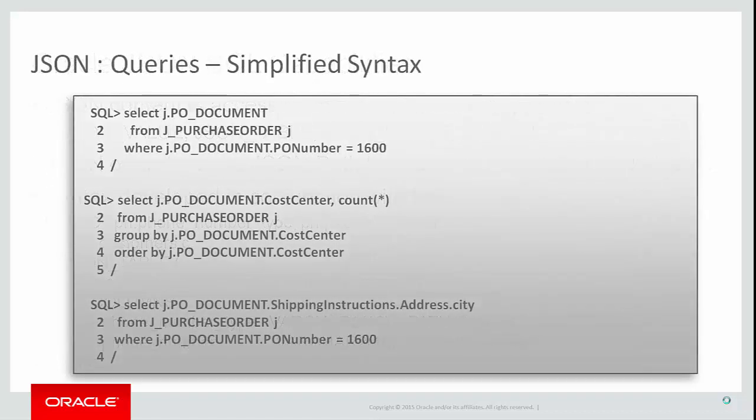One thing we learned was to keep it simple. In order to simplify accessing JSON content via SQL, Oracle supports a simplified syntax for JSON access in addition to the SQL/JSON operators. The simplified syntax allows you to navigate JSON content by simply appending a JSON path expression to the name of a column — essentially dotting your way through your JSON in much the same way you would navigate a JavaScript object. In order to use the simplified syntax, the column must have an IS JSON constraint applied to it, an alias for the table must be specified in the FROM clause, and the column must be qualified with the table alias.